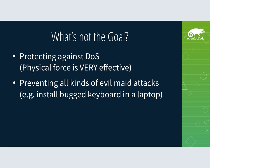There are some things which are not part of the goal, like protecting against denial of service. This is impossible to achieve using software because you can just use a hammer, scissors, or cut power — the system is down and you can't do anything about that. You can try to prevent some denial of service attacks by redundancy and hardening hardware, but absolute guarantee is definitely impossible.